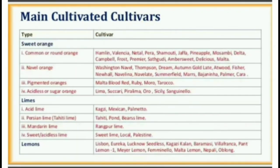Main cultivated cultivars — Sweet Orange: Number one, common or round orange cultivars include Hamlin, Valencia, Natal, Pera, Shamuti, Jaffa, Pineapple, Mossambi, Delta, Campbell, Frost, Primer, Sadgudi, Amber Sweet, Delicious, and Malta. Number two, navel orange cultivars include Washington Navel, Thompson, Dream, Autumn Gold, Late, Earthwood, Fisher, Navahali, Navelina, Navelate, Summerfield, Mars, Bajinha, Palma, and Kara. Number three, pigmented oranges include Malta Blood Red, Ruby, Moro, and Taroko. Number four, acidless or sugar oranges include Lima, Sucari, Pira Lima, Oro, Salicy, and Sanguinillo.